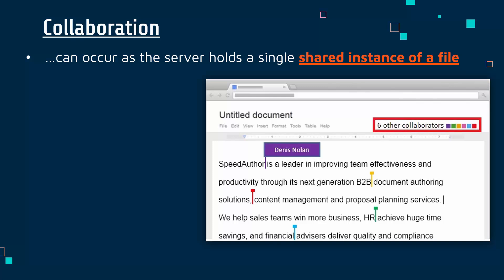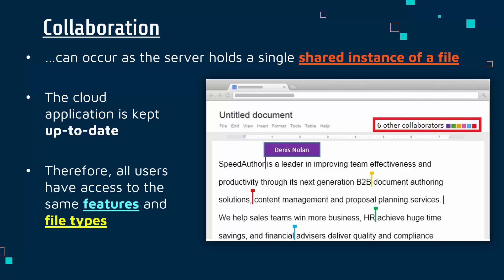One person might use Microsoft Word, another Google Docs, another OpenOffice — there's not always consistency. Another benefit of cloud computing is that the application accessed via the browser is controlled by the server, so all users see the same up-to-date version. As a user you're not in control of which version is used, which keeps features and file types consistent. For instance, Microsoft Word has .doc and the newer .docx — different file types that don't always convert perfectly, creating awkward friction. Having one consistent cloud application reduces the risk of that.